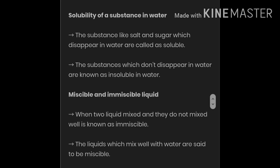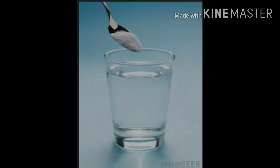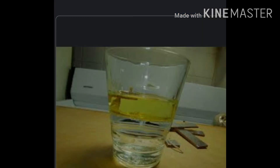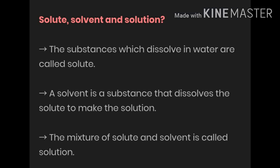Kerosene oil and mustard oil do not dissolve in water, so they are called immiscible substances. Lemon juice and orange juice dissolve in water, so they are termed miscible substances. Water is the solvent; oil floats on the surface of water, showing it is immiscible. The substance that dissolves in water is called the solute. The mixture of solute and solvent together is called a solution. Not only liquids and solids dissolve in water, but gases such as carbon dioxide and oxygen also dissolve in water.